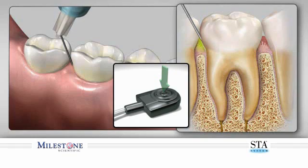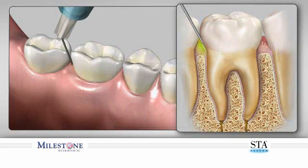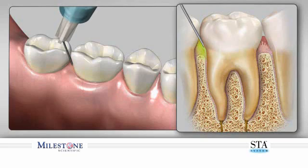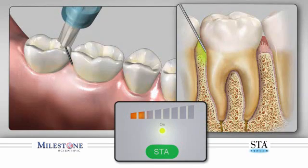The control flow rate is initiated by depressing the foot control, and after three audible beeps, you will hear the unit announce 'cruise.' Once you hear the word 'cruise' spoken, you may remove your foot, and the STA system will continue the flow of anesthetic solution until you depress and release the foot control again to stop the flow.